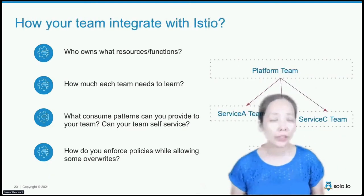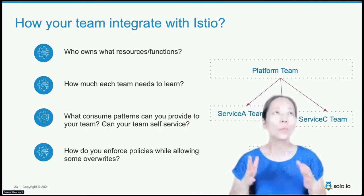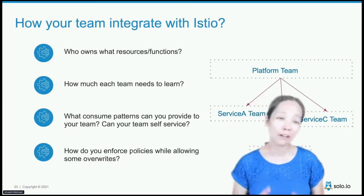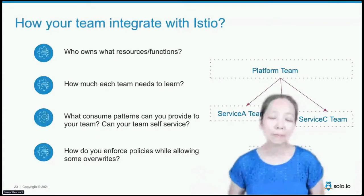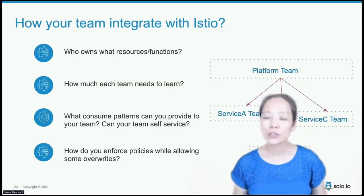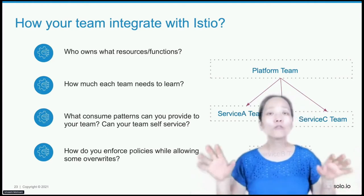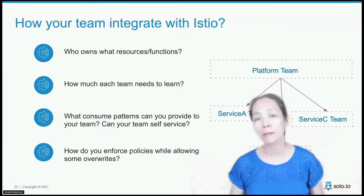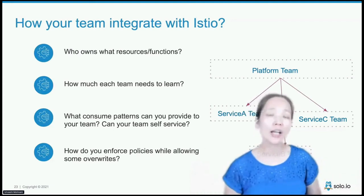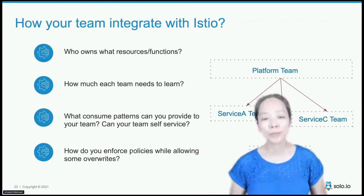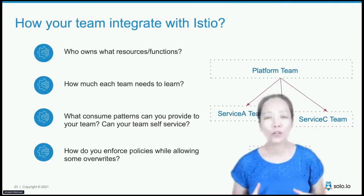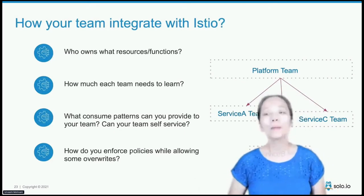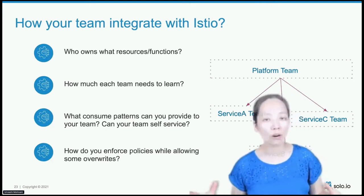Also think about how your team is going to integrate with Istio. Who owns what resources and functions, and how much does your team need to learn? Ideally, minimize the learning for service teams — your platform team should understand Istio's resources and hide that complexity from service teams, so they can leverage the mesh without much learning, just injecting the sidecar and using default policies. Provide self-service consumption patterns and decide how to enforce policy at the global, team, and namespace levels while still allowing overrides as needed.